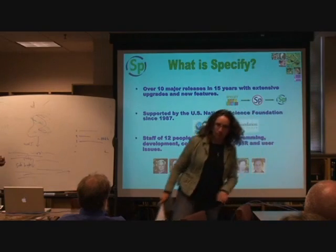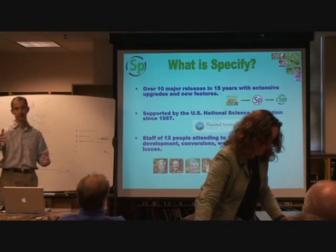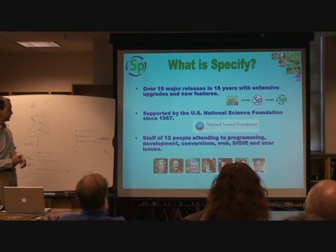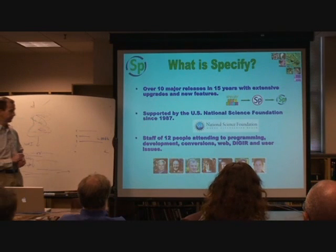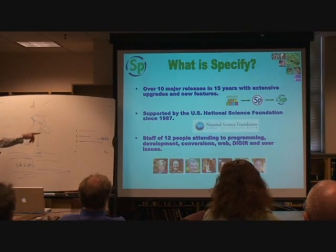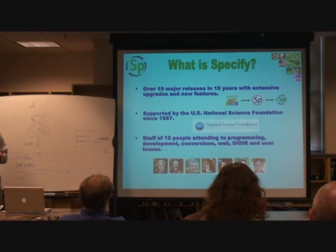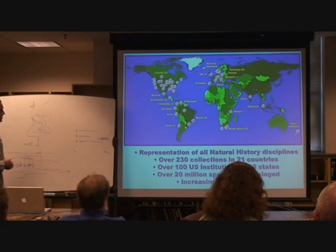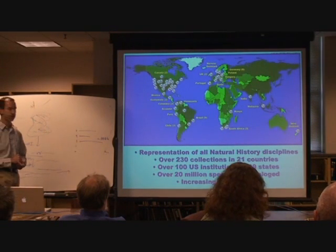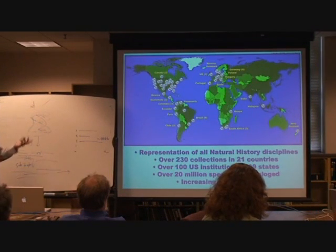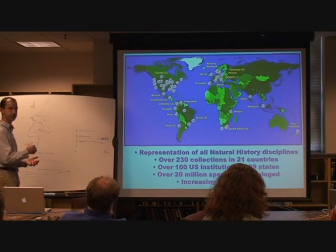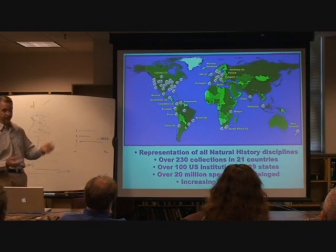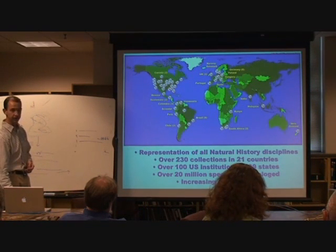We've been through about 10 major releases in about 15 years, from the old Muse days right through Oz and various incarnations of Specify up to the latest version. We've been supported consistently by NSF since 1987 — it's one of the longest running single grants funded by NSF. We have a staff of 12 people attending to programming, development, conversions, web and Digger work, and user issues. We have 230 collections in 21 countries, a hundred of those in the US across 39 states, spanning all natural history and paleontological disciplines. We estimate about 20 million specimens are catalogued in Specify at the moment.